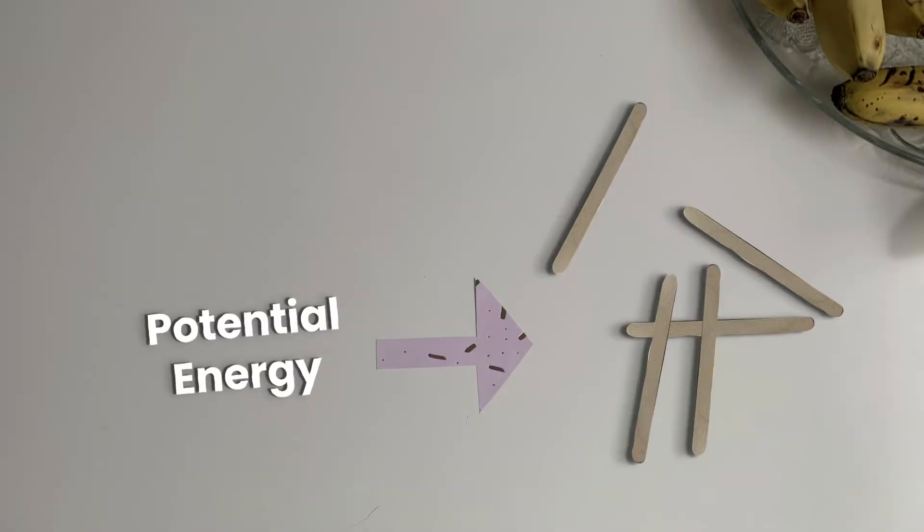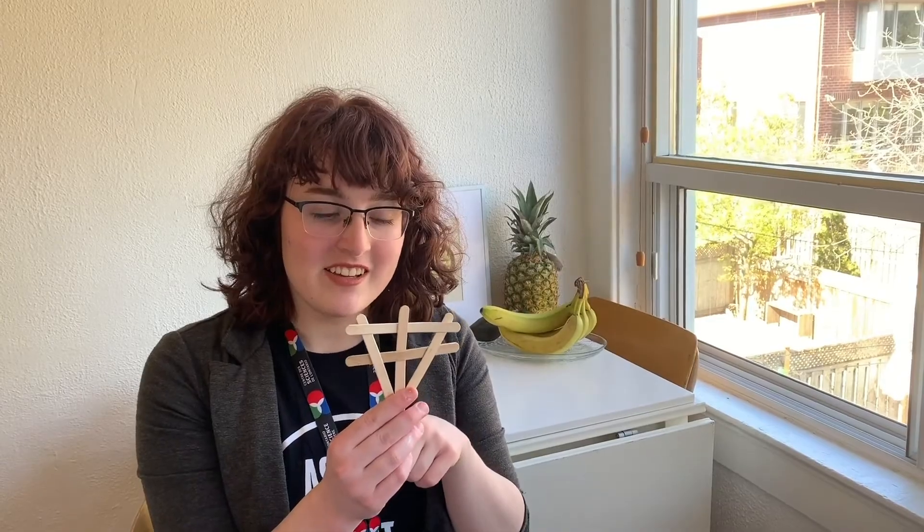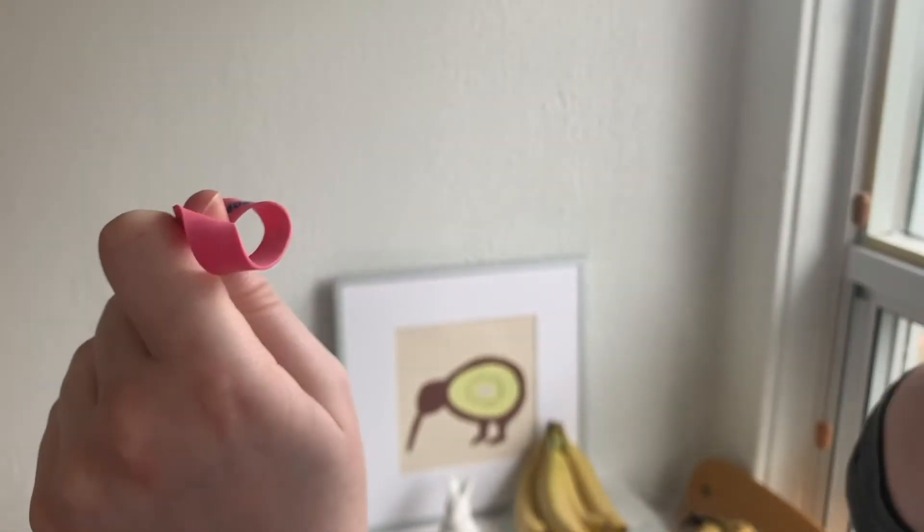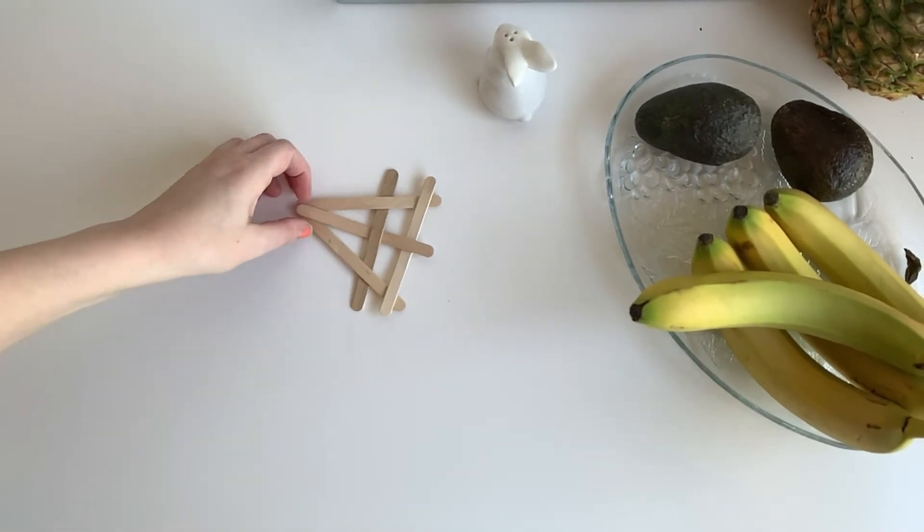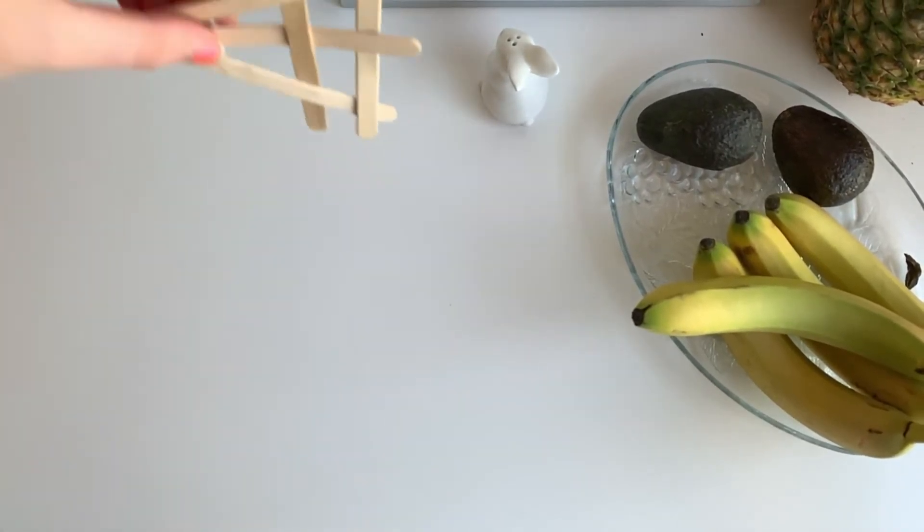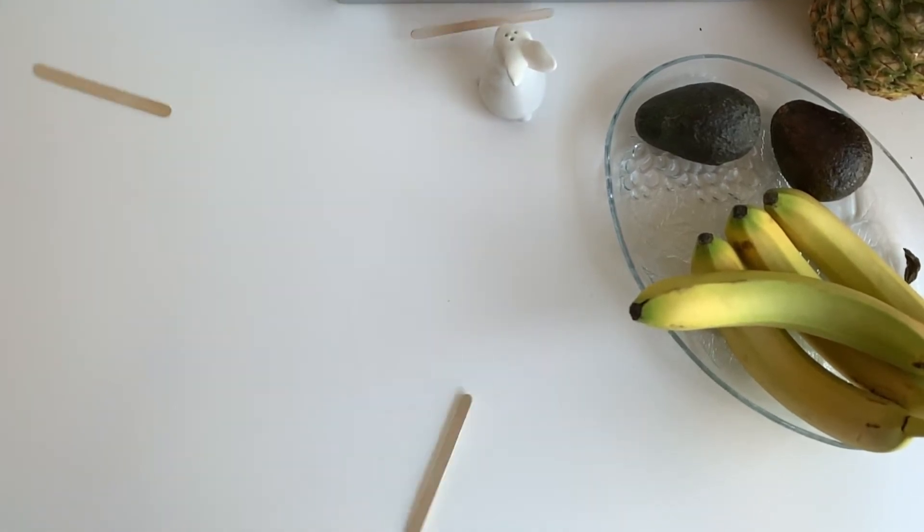The second type of energy is called potential energy. Tension is created in the shape that's woven together. Tension is when something is being stretched or pulled. In creating this tension, we've stored some potential energy that later becomes the explosion. In order to kick off the energy transformation, you just disrupt the popsicle sticks.